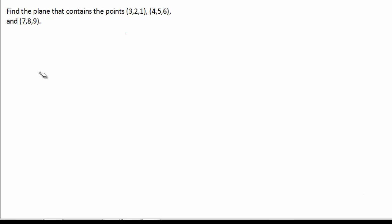Well, let's start by drawing these points. Say these are our three points: (3, 2, 1), (4, 5, 6), and (7, 8, 9). Then we can find two vectors in our plane by subtracting our points. These two vectors, let's call them U and V, we can find by subtracting the head from the tail.